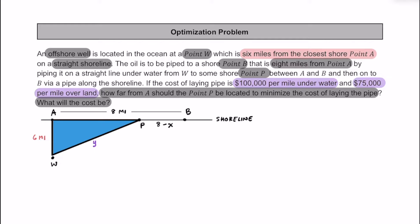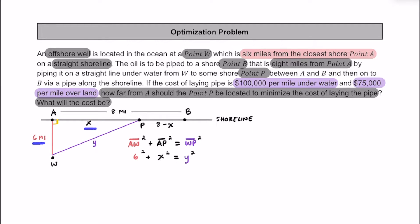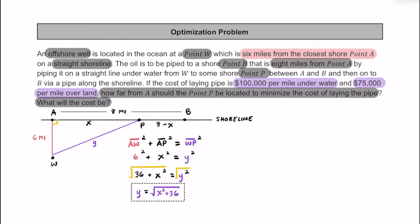Notice the right triangle formed by points W, A, and P. Using the Pythagorean theorem: AW² + AP² = WP², which gives 6² + X² = Y², or 36 + X² = Y². Taking the square root of both sides, we isolate Y: Y = √(X² + 36).